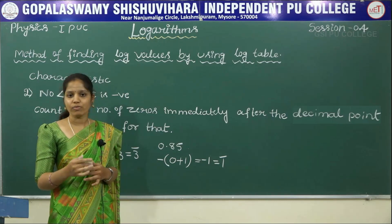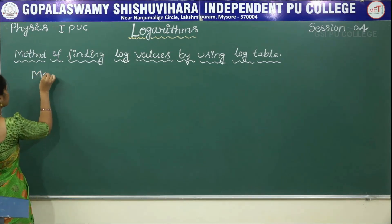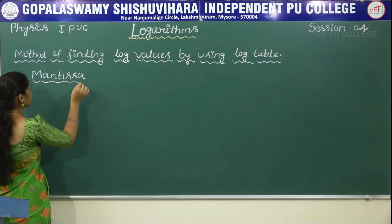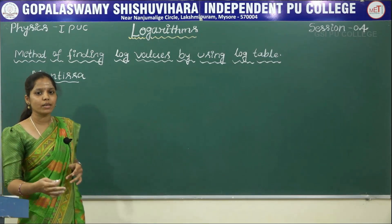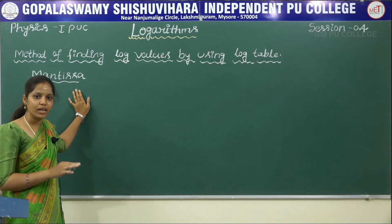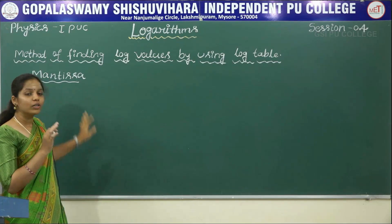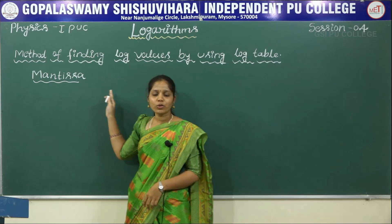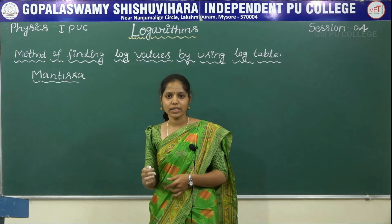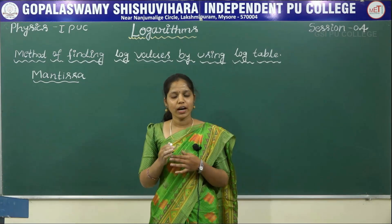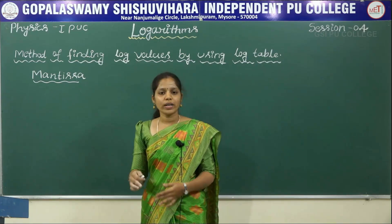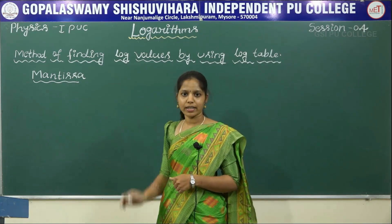Next, we will discuss about the mantissa of a given number. The mantissa is the decimal part of the logarithm and it is always positive. To find out the mantissa, we have to use the log table. We neglect the decimal point and the zeros at the beginning and end of the given number.